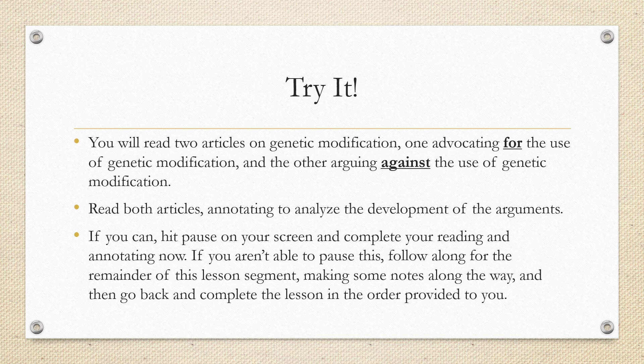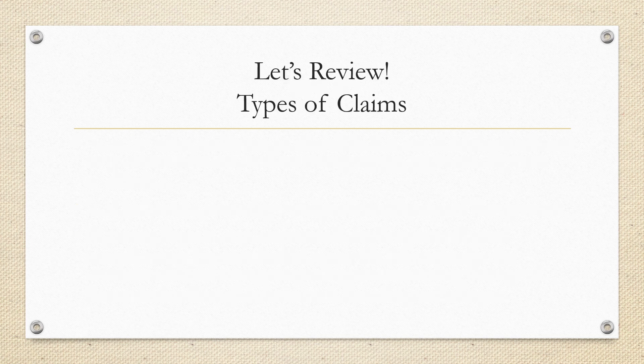If you aren't able to pause this, follow along for the remainder of this lesson segment making some notes along the way, and then go back and complete the lesson in the order provided. Now that you've read and annotated the two articles on genetic modification, let's review types of claims and reasoning so that you can brush up on your skills and knowledge in preparation for evaluating each argument. You may want to take some notes on these next several slides if you're struggling to remember this information.